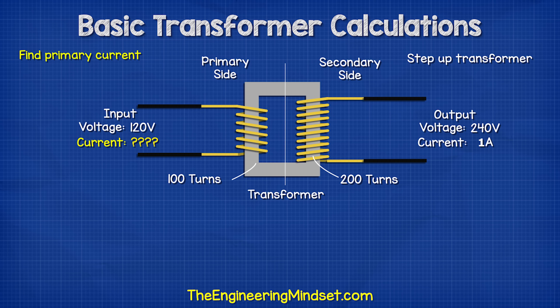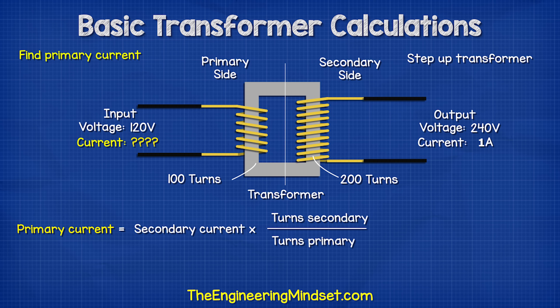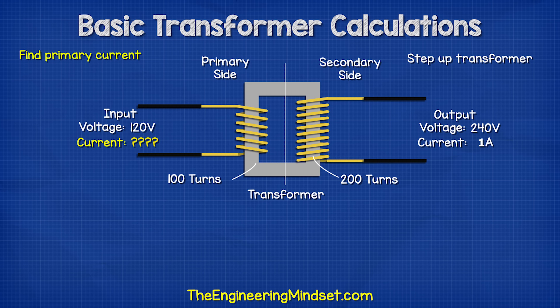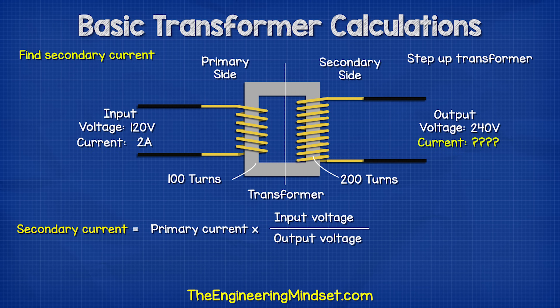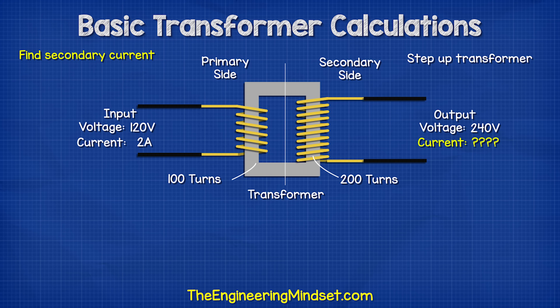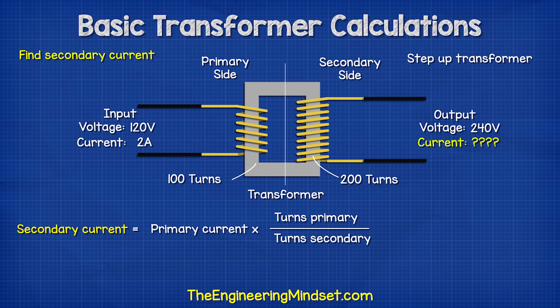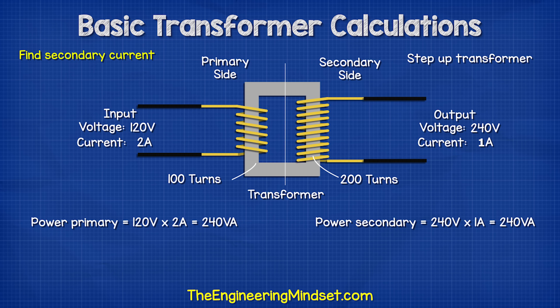If we had a current of 1 amp on the secondary, then we find the primary current by using this formula, and we see the answer is 2 amps. We could also find the answer if we knew the secondary current and both voltages by using this formula. If we knew the current on the primary side and the voltages of the primary and secondary, we could find the secondary current using this formula, or we could also find the answer by using this formula if we knew the number of turns.